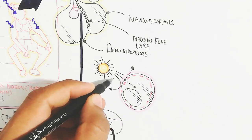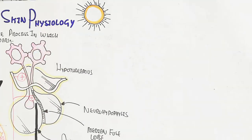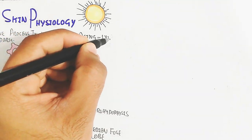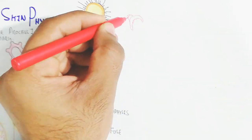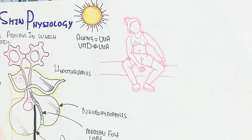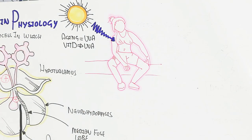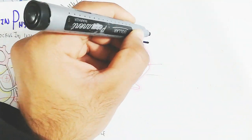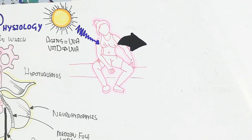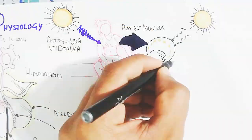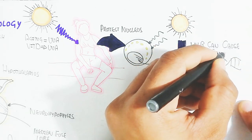The purpose of tanning is essentially to protect the nucleus, which contains DNA. Aging is related to UVA radiation, and vitamin D production is also stimulated by UVA radiation. UVA is not as harmful as UVB, but protection of the nucleus against UVB is critical.